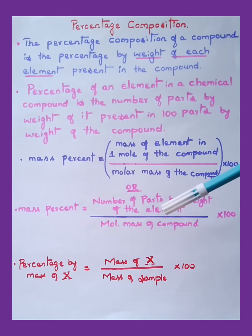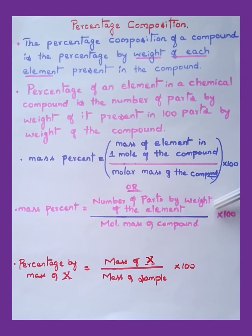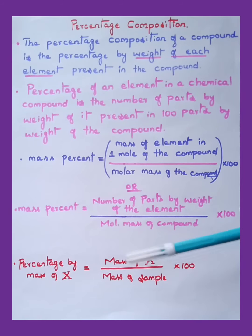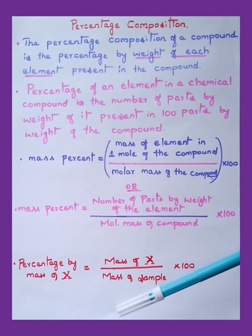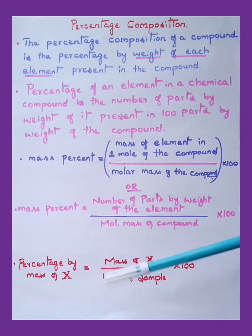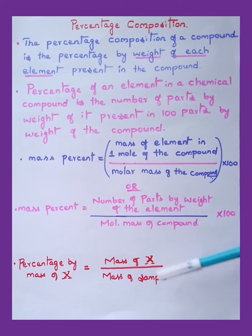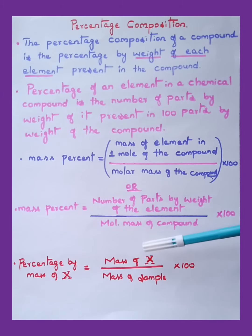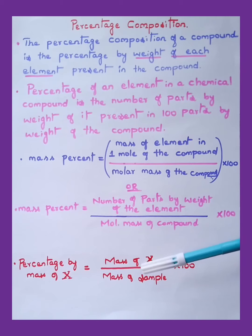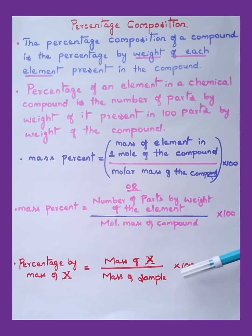Alternatively, mass percent is equal to number of parts by weight of the element divided by mass of the compound into 100. We can express this as: percentage by mass of X = mass of X divided by mass of the sample, into 100.